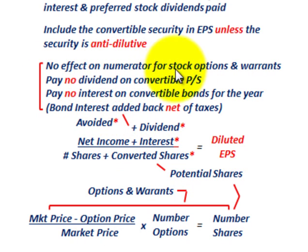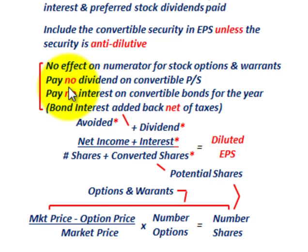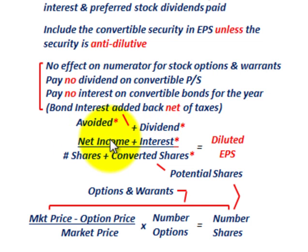For stock options and stock warrants, there's no effect on the numerator — they don't affect any net income amount. But for convertible preferred stock dividends, since they would be converted at the beginning of the year, we would pay no dividend, so we have to add back that dividend when looking at diluted EPS.